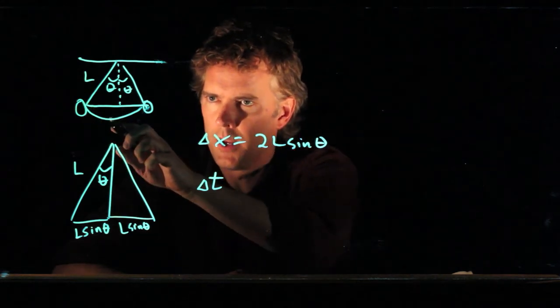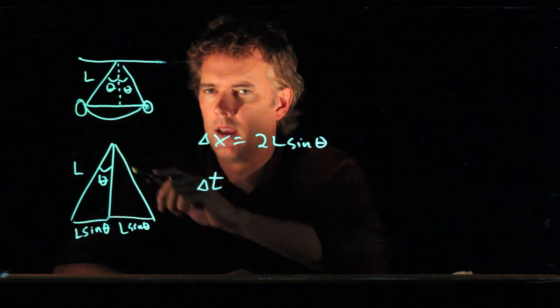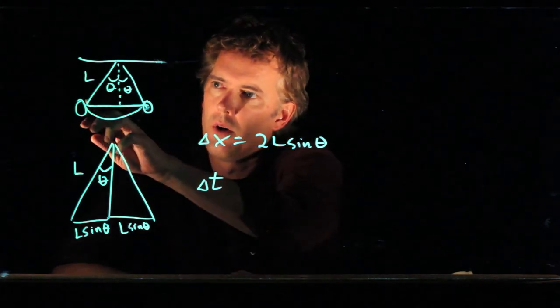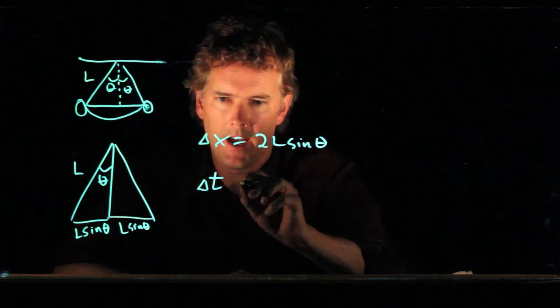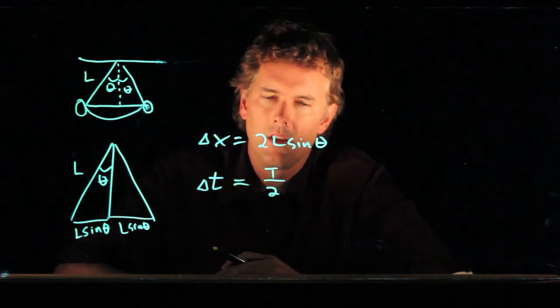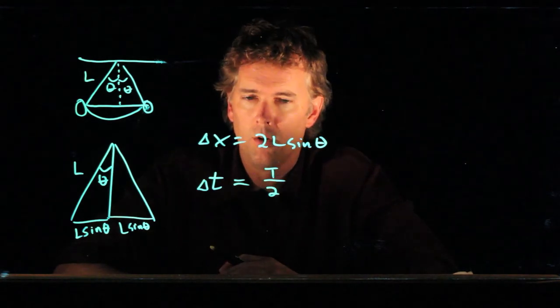A pendulum will swing there and back in a period capital T. And so if we want to go half of that, the delta t that we're interested in is the period of a pendulum over 2.